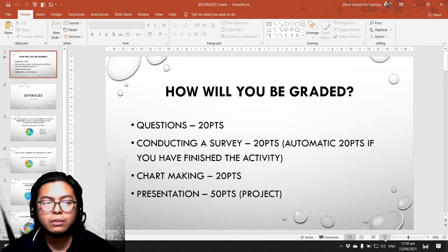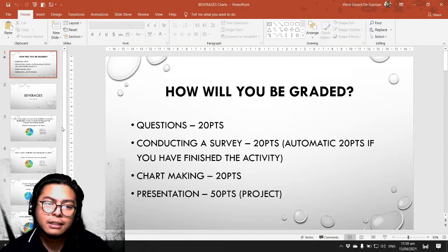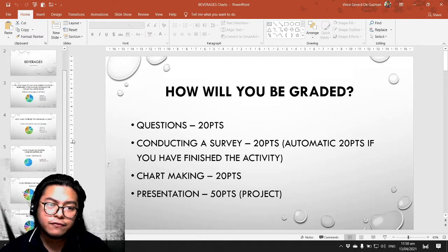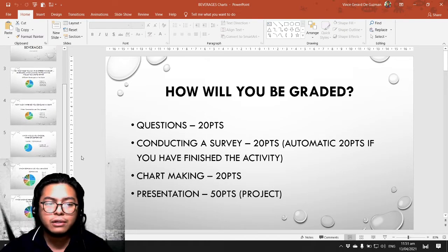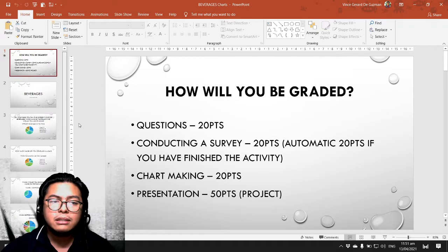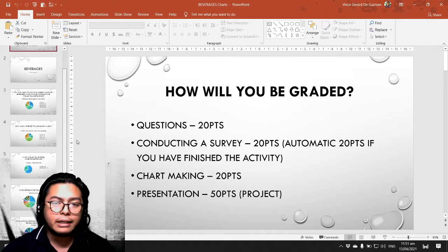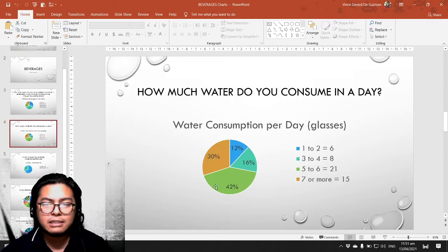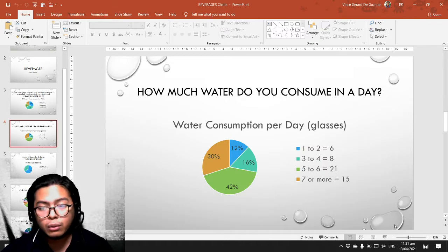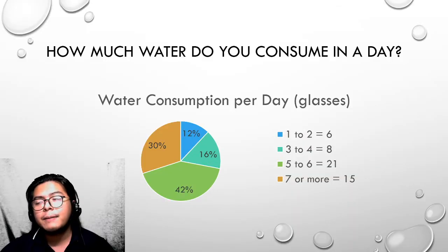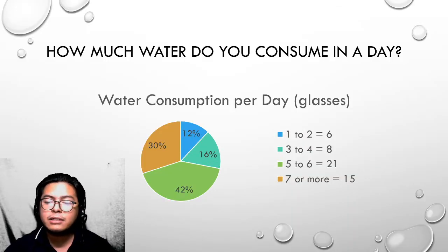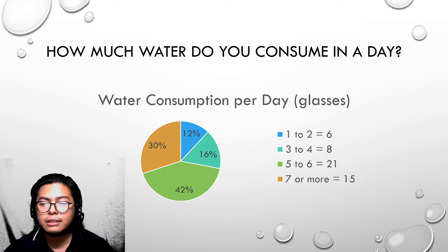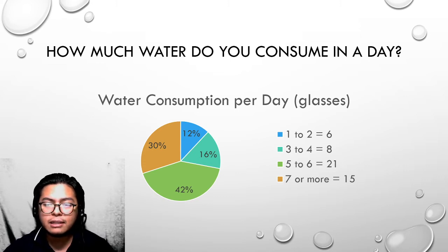For your survey, you have four or five questions and you will only select one that you are going to present to your class. For example, this is my chosen slide — this is my chosen question that I selected to present to the class.